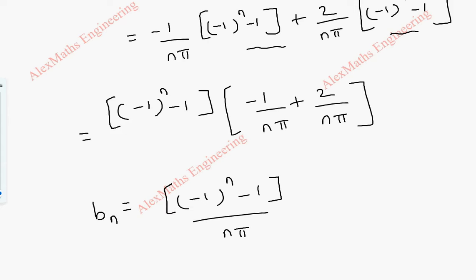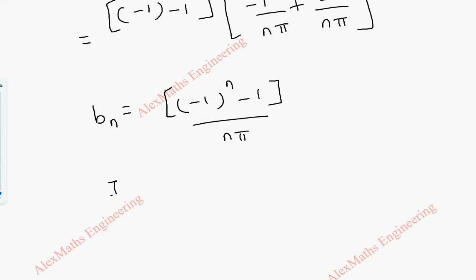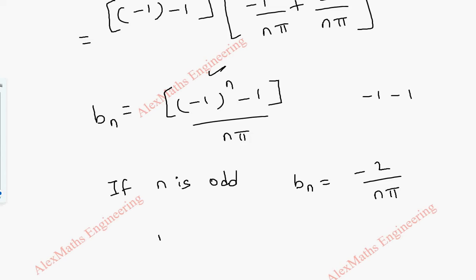Now evaluating bₙ by cases: if n is odd, (−1)ⁿ = −1, so (−1)ⁿ − 1 = −2, giving bₙ = −2/(nπ). If n is even, (−1)ⁿ = 1, so (−1)ⁿ − 1 = 0, giving bₙ = 0.